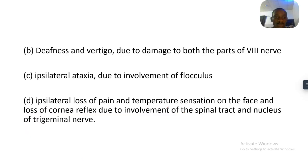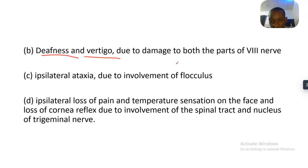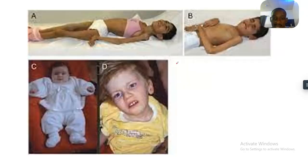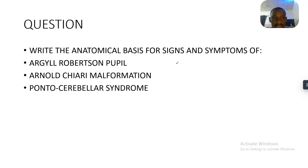There will also be deafness and vertigo due to damage to both parts of cranial nerve 8, and ipsilateral ataxia due to involvement of the flocculus. There is ipsilateral loss of pain and temperature sensation on the face, and loss of corneal reflex due to involvement of the spinal tracts and nucleus of the trigeminal nerve, which also supplies sensation to the face. That concludes the discussion — see you in the next tutorial.